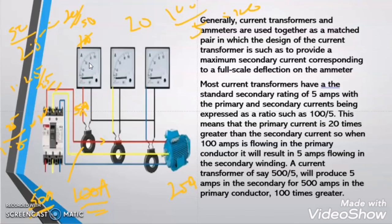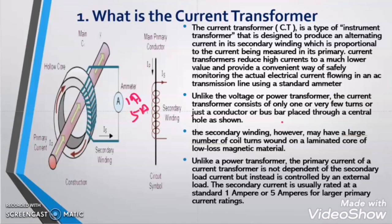I will discuss more deeply about the CT ratio in my further video when I cover the nameplate detail of the current transformer. Now you understand how the ammeter takes only 5A but reflects 100A because it knows the CT ratio — we fix the ammeter of the same ratio as the CT. I hope you find this video informative and clearly understand what is current transformer and its working principle and operation. I will make more videos on current transformer, so stay tuned. Keep learning and bye bye, thank you so much.